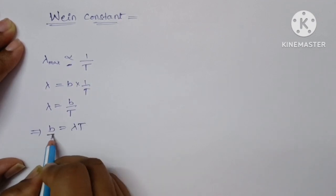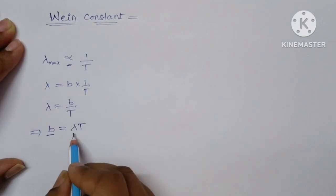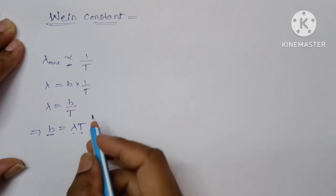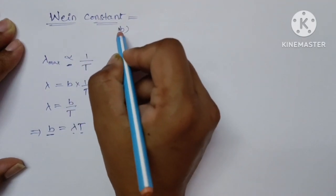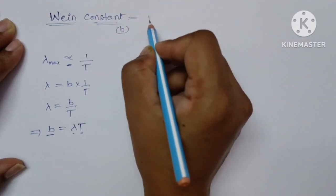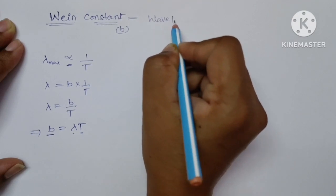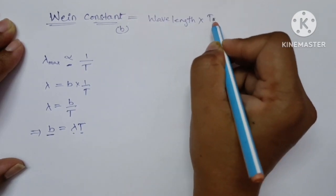Here B is called Wien constant and lambda is the peak wavelength of blackbody radiation and T is the temperature of blackbody. So here we got the formula for Wien constant which is denoted with letter B which is equal to wavelength multiplied by temperature.